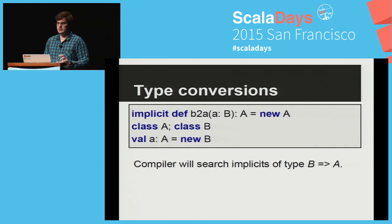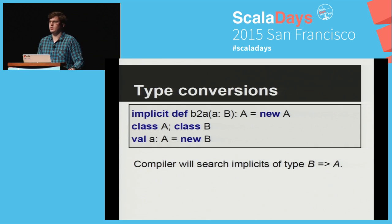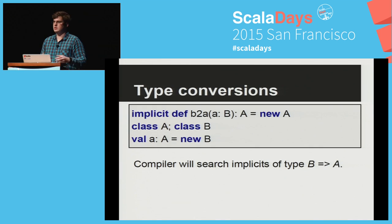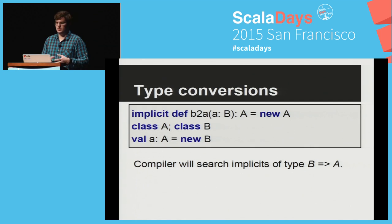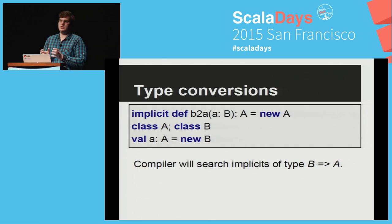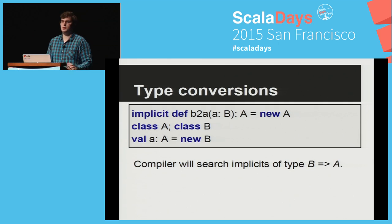We have two classes, A and B. The last line contains a declaration: a value A of type A and we're giving it a new B. For most compilers it won't compile. But in Scala, the compiler will start to search for implicit conversions from type B to A — meaning a functional type B to A. Every definition is like a value with a functional type, and if this function has some implicit parameter sections, those will be ignored.